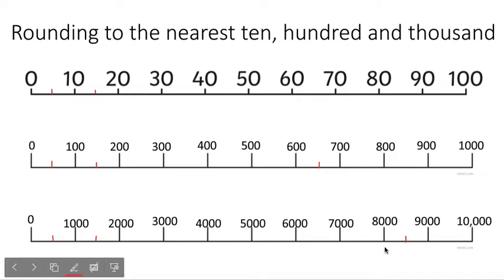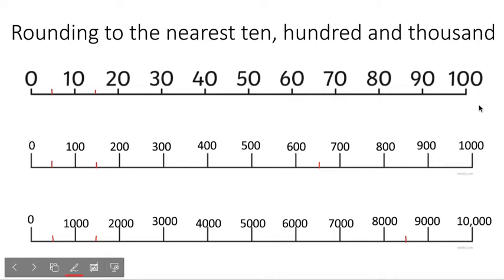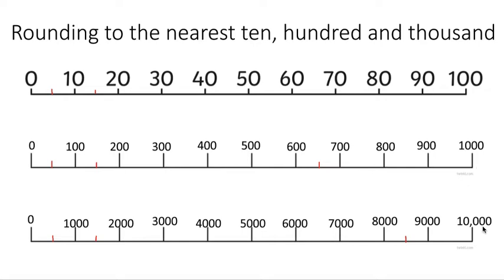So when you're rounding, you're looking for what it's closest to. If you're rounding to the nearest 10, you know it's going to be a multiple of 10 — it's going to have a 0 in the 1s column. If you're rounding to the nearest 100, you are going to have a 0 in the 1s column and the 10s column, making a number that is a multiple of 100. And if you're rounding to the nearest 1,000, you're going to have a 0 in the 1s, 10s and 100s columns — it's going to be a multiple of 1,000.